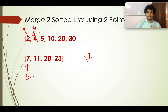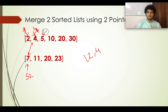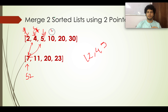Now you compare S1 and S2. The values are 4 and 7 — you add 4 to the result and move S1 to the next pointer, which is 5. You again compare 5 and 7 — 5 wins, so 5 is added to the result. The pointer moves to 10. Now 7 is lower than 10, so you choose 7 and add it to your resultant list.